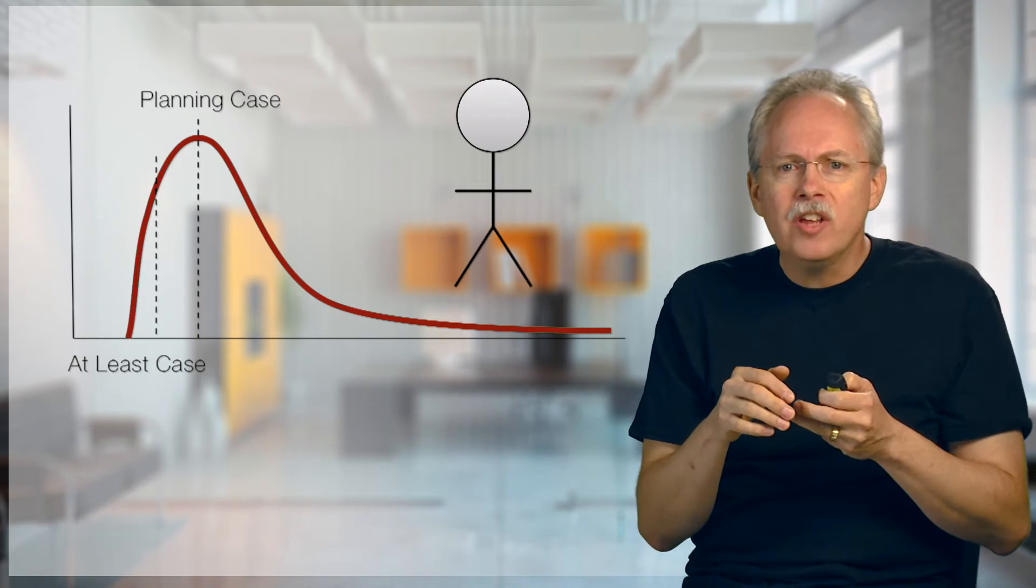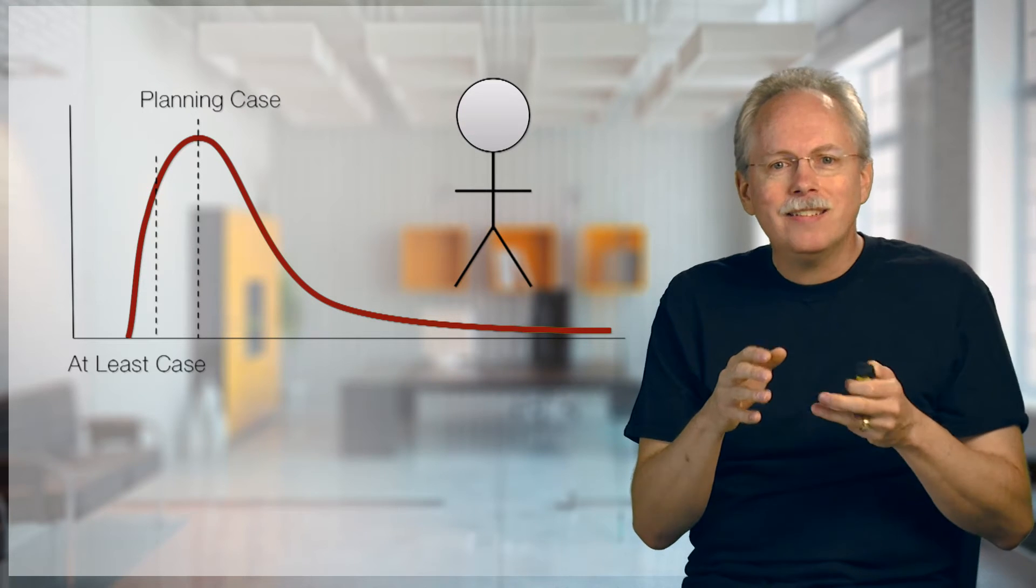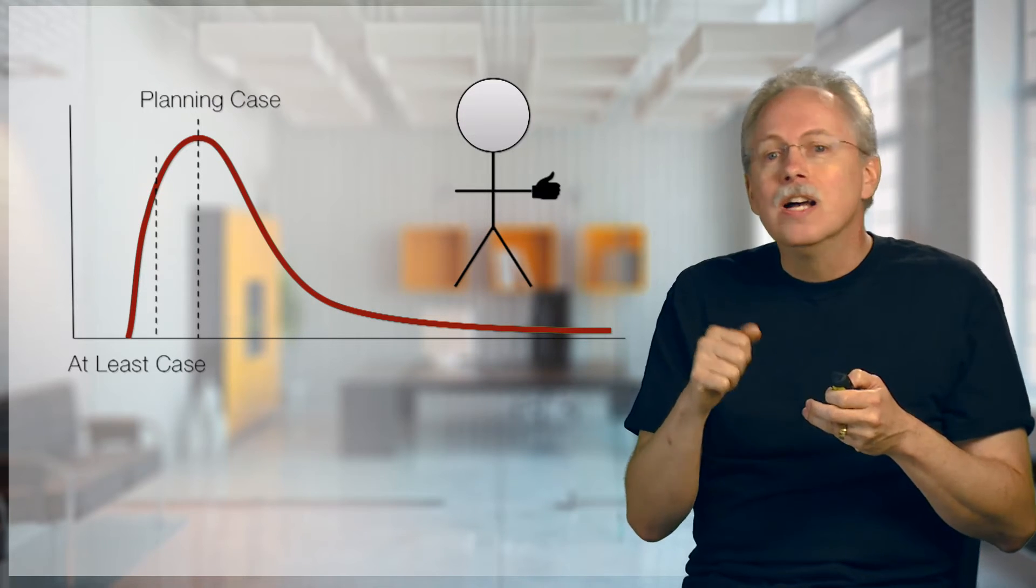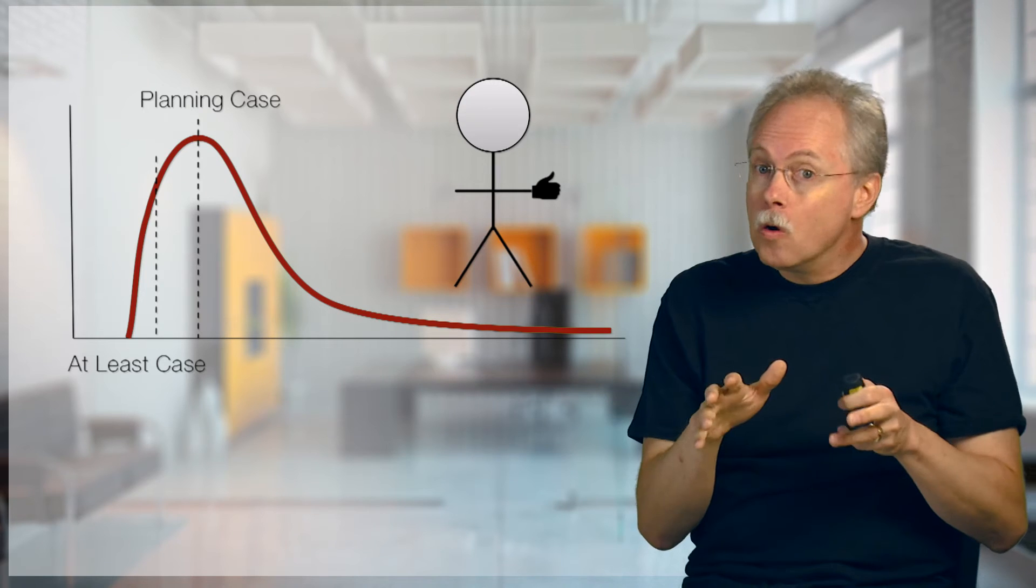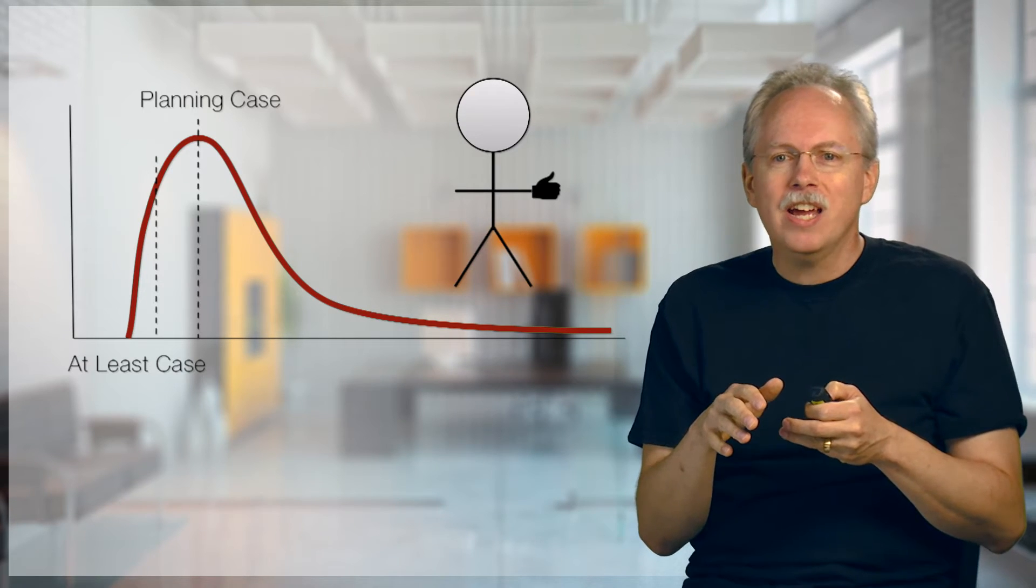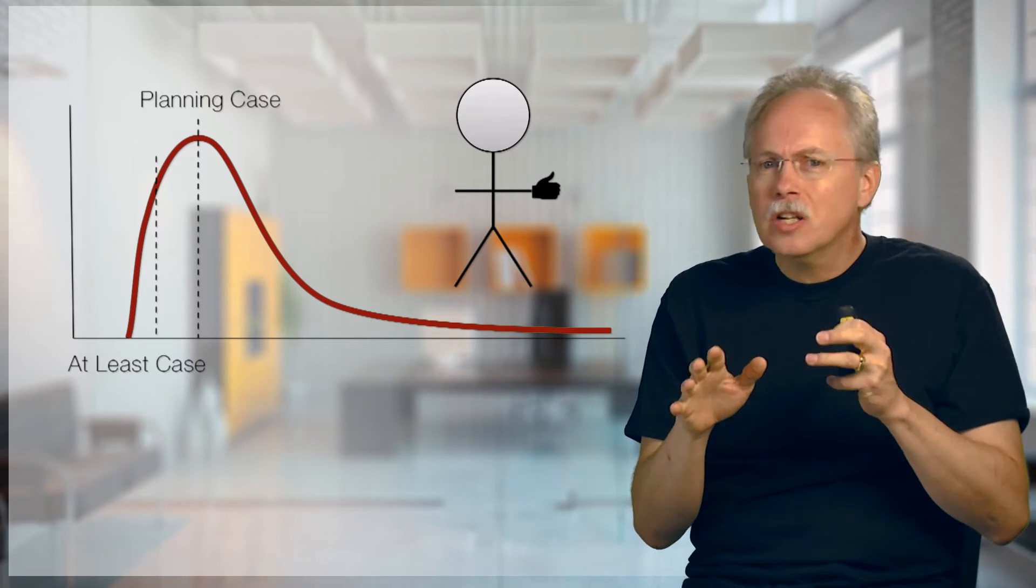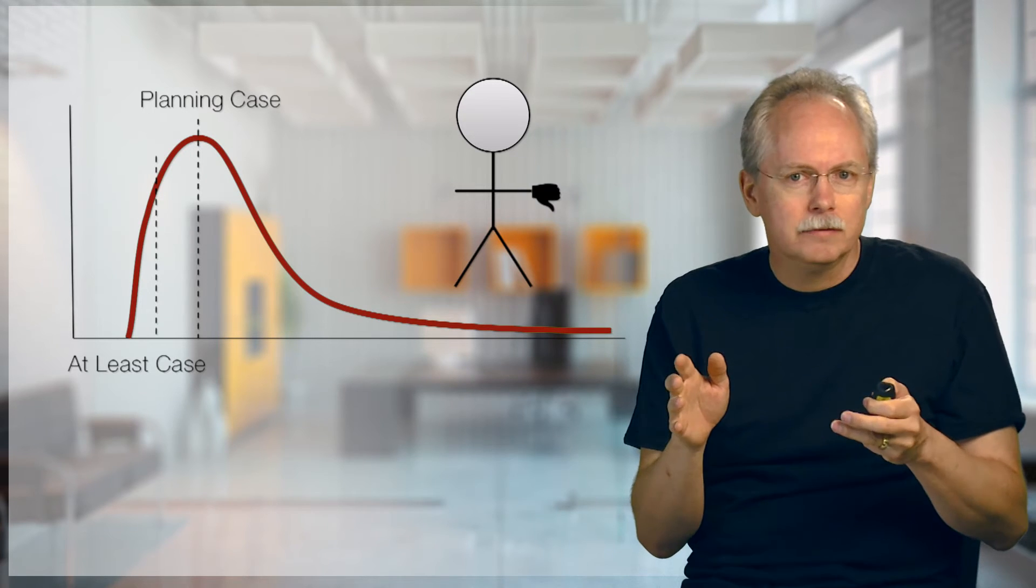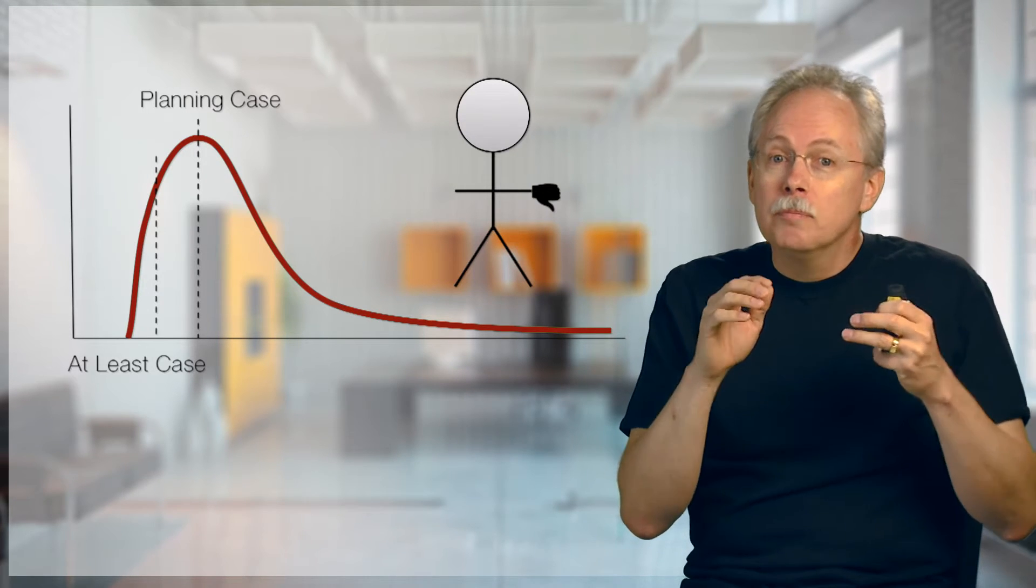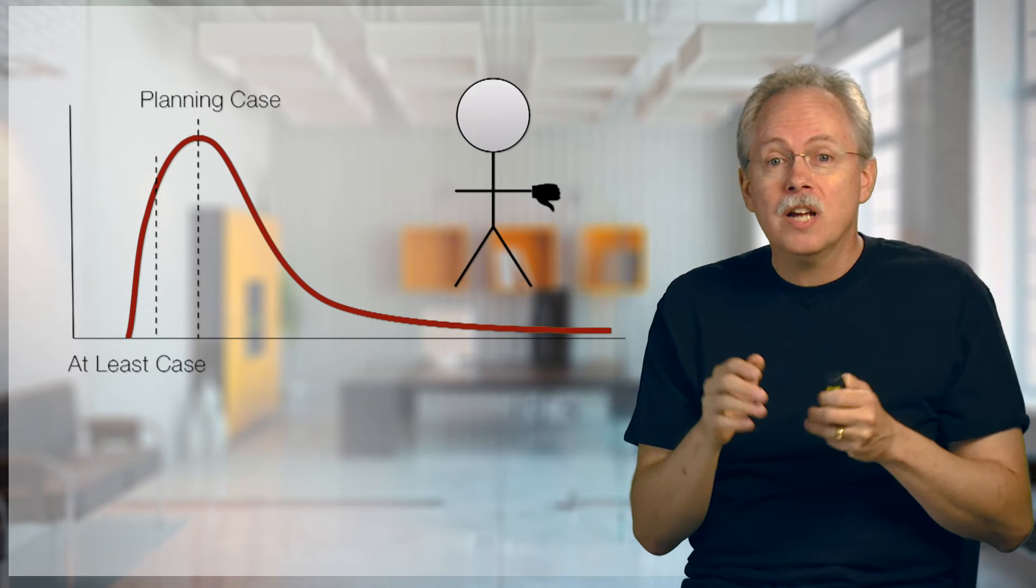And so when we share that with our stakeholder friend, looking at these two numbers, they can say yes, given those two numbers, the at least and planning, I think this is a go. Let's keep doing it. Or looking at those two numbers they can say, you know what, this isn't really giving the ROI I was hoping for, so let's kill it. So planning case is either go or no go. That's what we're talking about here.